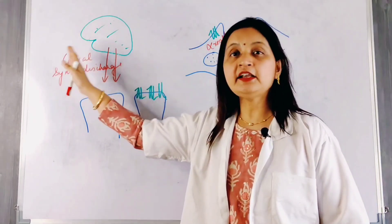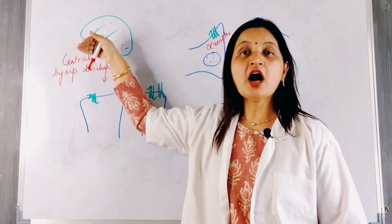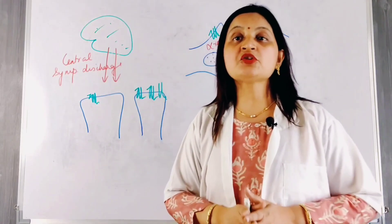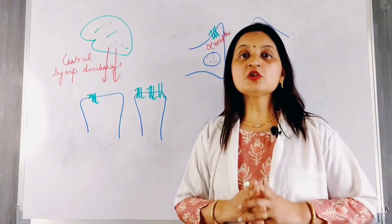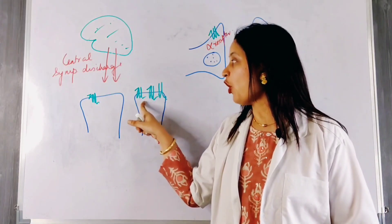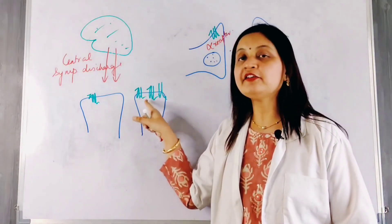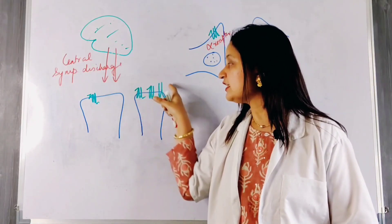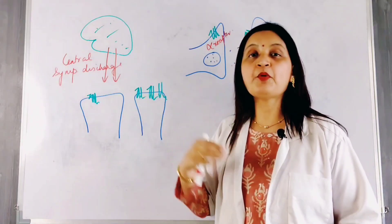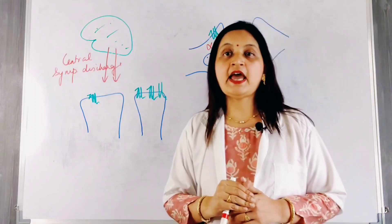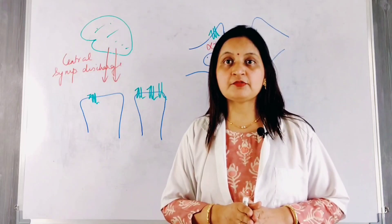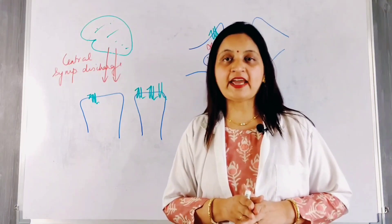When clonidine is suddenly withdrawn, there is a large release of epinephrine and norepinephrine into the circulation, causing a rise in blood pressure. Also, because of the sympathetic blockade caused by clonidine, there is up-regulation or super-sensitivity of adrenergic receptors. More adrenergic receptors become available in the nerve endings, and these receptors respond to even small doses of catecholamines, causing an exaggerated response and a sharp rise in blood pressure.